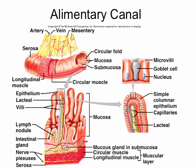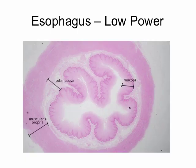As we move through the histology of the tube, be sure to identify these four layers when you can. Let's start with this low power view of the esophagus. Notice the transitions between the mucosa, the submucosa, and the muscular layer, which is here labeled the muscularis propria.